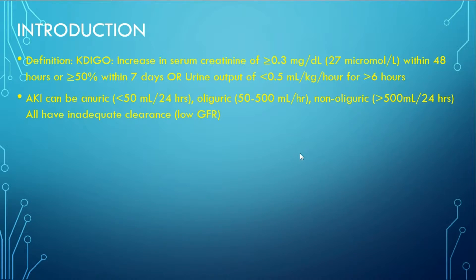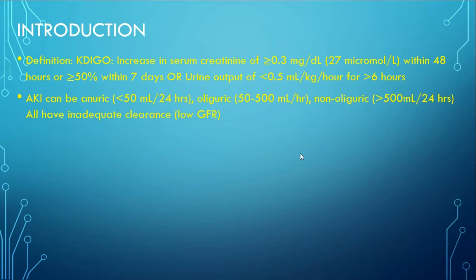Acute kidney injury can be anuric — less than 50 ml per day — or oliguric, 50 to 500 ml per day, or non-oliguric, which is more than 500 ml per day. All have inadequate clearance with low GFR. However, data shows that the prognosis of non-oliguric AKI is, in general, better than oliguric or anuric AKI. So when a patient has AKI but is still producing a good amount of urine, that's a good prognostic sign.